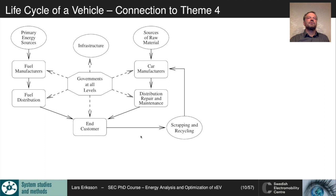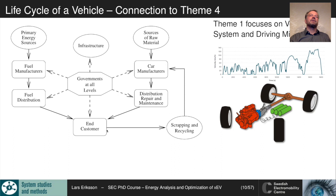In this process, governments at all levels influence the rules for manufacturing, taxation for the end customer, and impose restrictions on production to help achieve a good environment. They also build the infrastructure we need as a society. In this system, theme one is focused very much on the vehicle system and the driving mission — on the usage of the vehicle and what we can do.